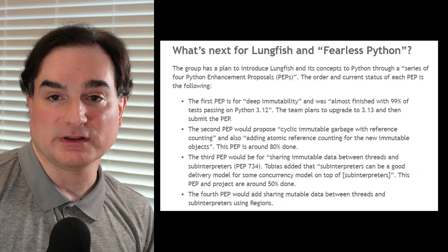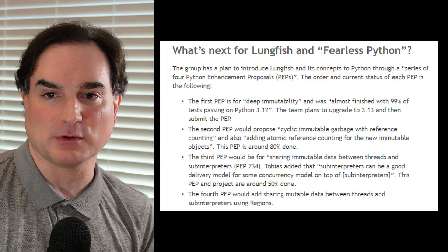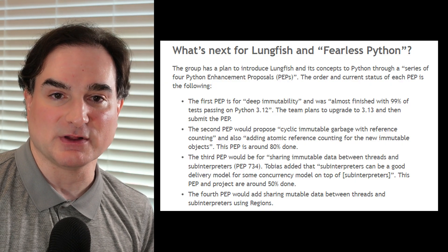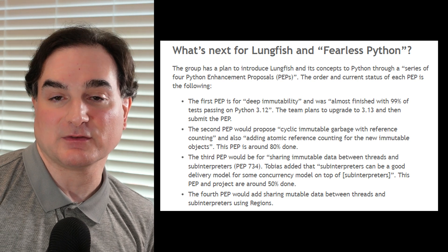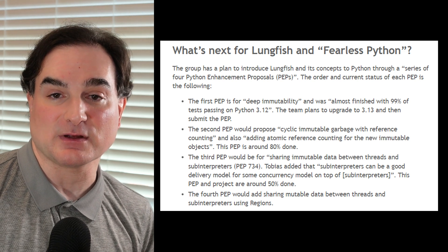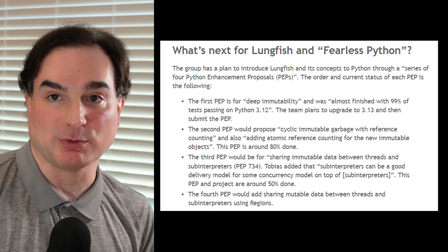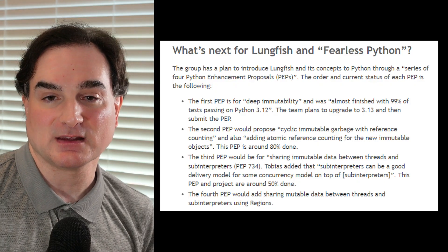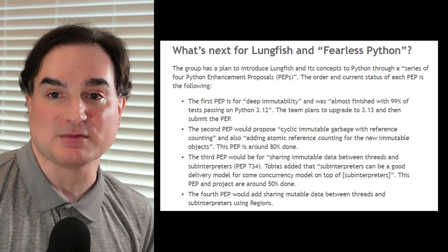All of this only exists as a proposal in the abstract — actually, it's a set of four proposals, each of which provides a different piece of the puzzle. The first is what's called deep immutability. Another is for modifying garbage collection and reference counting for immutable objects. A third is around sharing data for immutable objects between threads and subinterpreters. And the fourth is about sharing mutable data between regions. You can see how each of these builds on top of the others — the later proposals depend on the earlier ones, and that's why they're being worked on and submitted in that order.